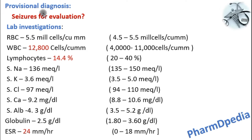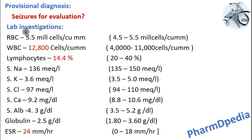Provisional diagnosis: As the patient was admitted due to the chief complaint of seizures, we need to evaluate the root cause. To evaluate, investigations like CBP, serum electrolytes, ESR, and MRI brain were ordered.